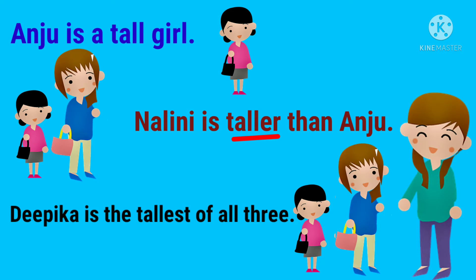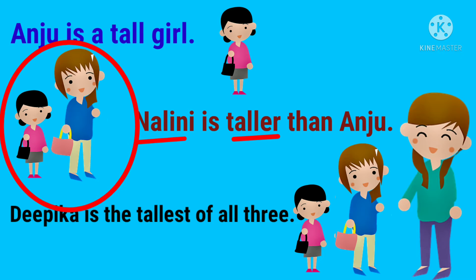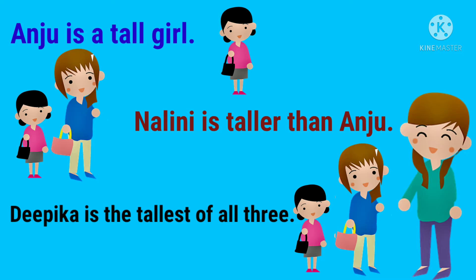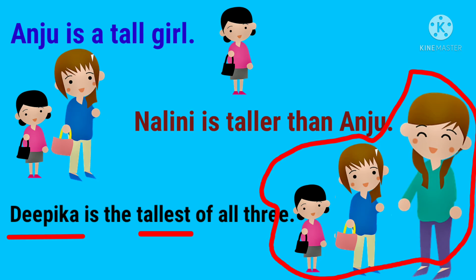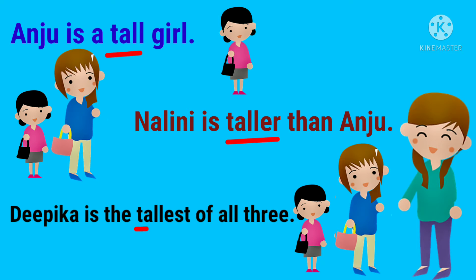In the second sentence, 'Nalini is taller than Anju,' the word 'taller' is an adjective describing the noun Nalini. But here, 'taller' shows a comparison between Nalini and Anju. In the third sentence, 'Deepika is the tallest of all three,' the word 'tallest' is an adjective, and it shows the comparison among more than two girls. So tall, taller, and tallest are different forms of the same adjective.